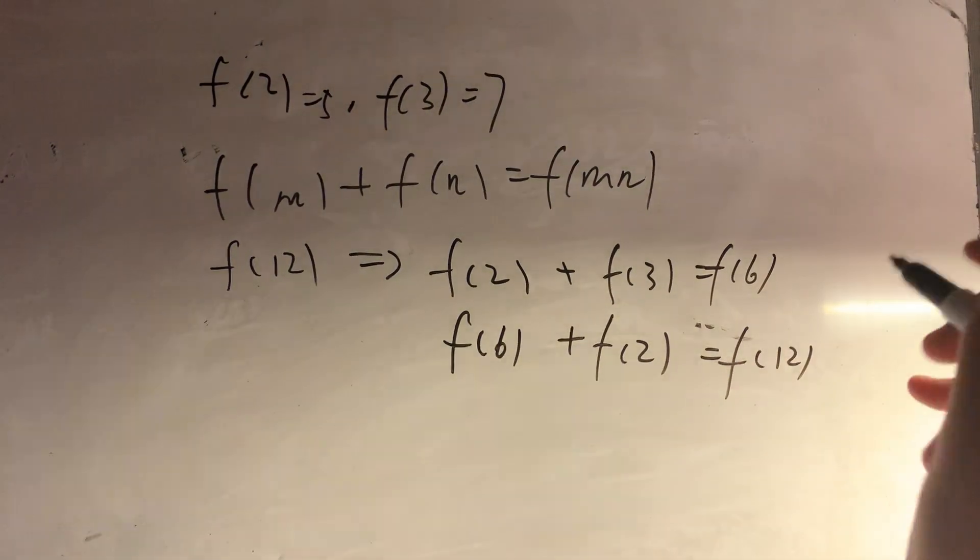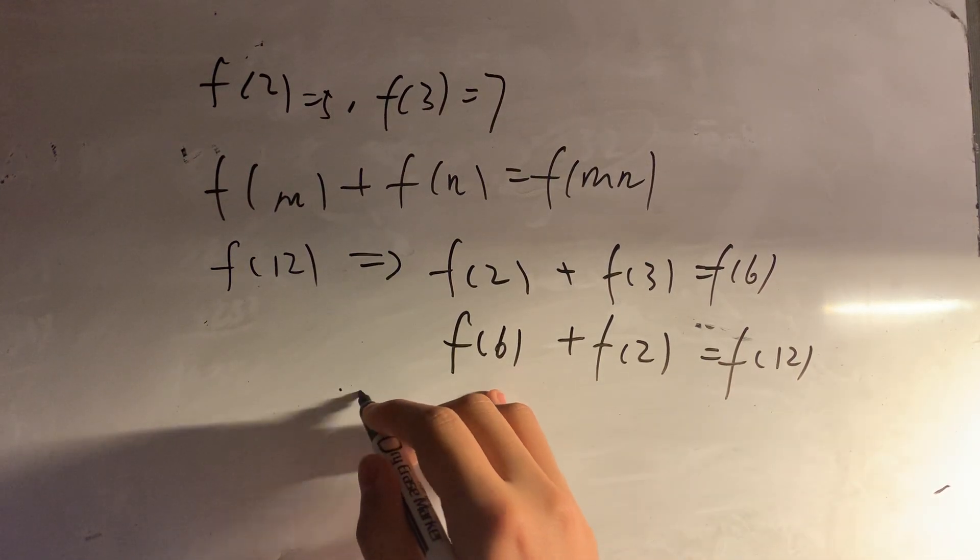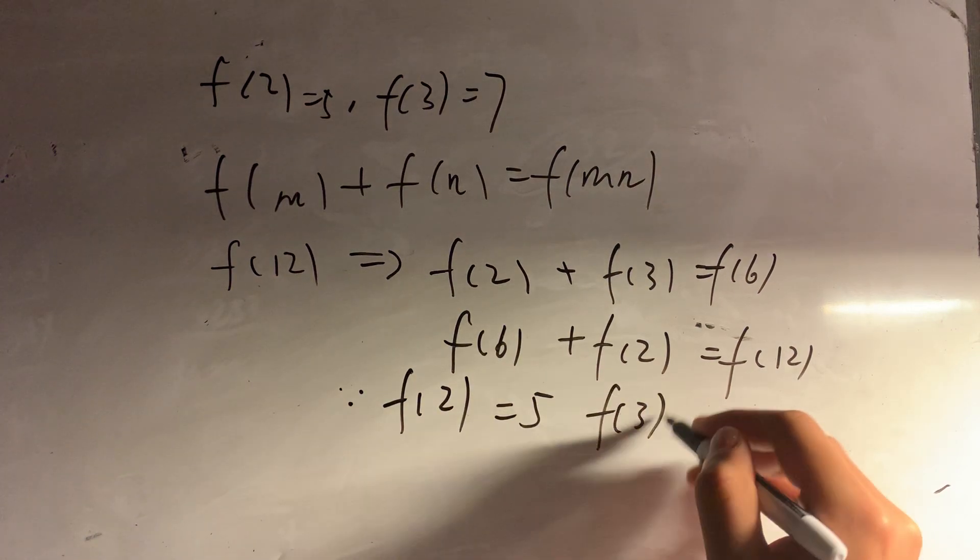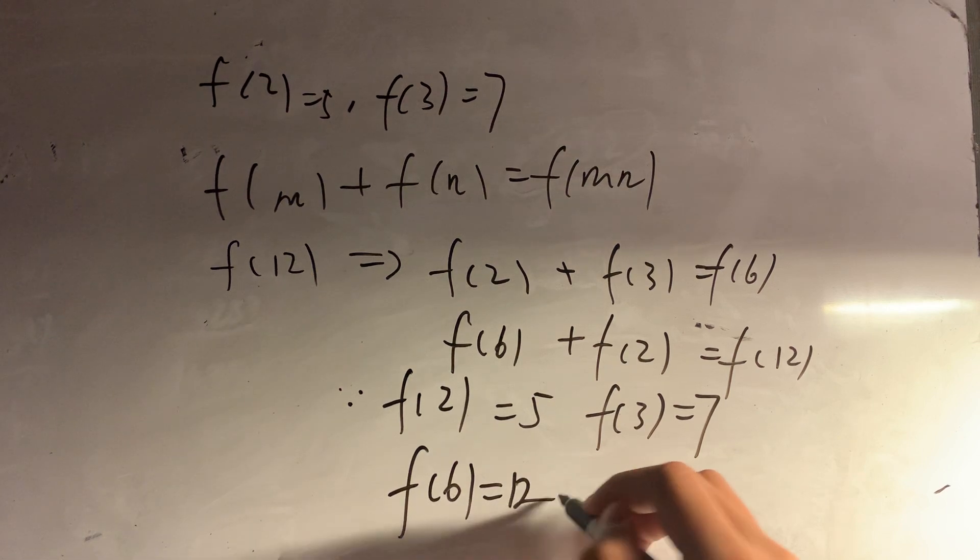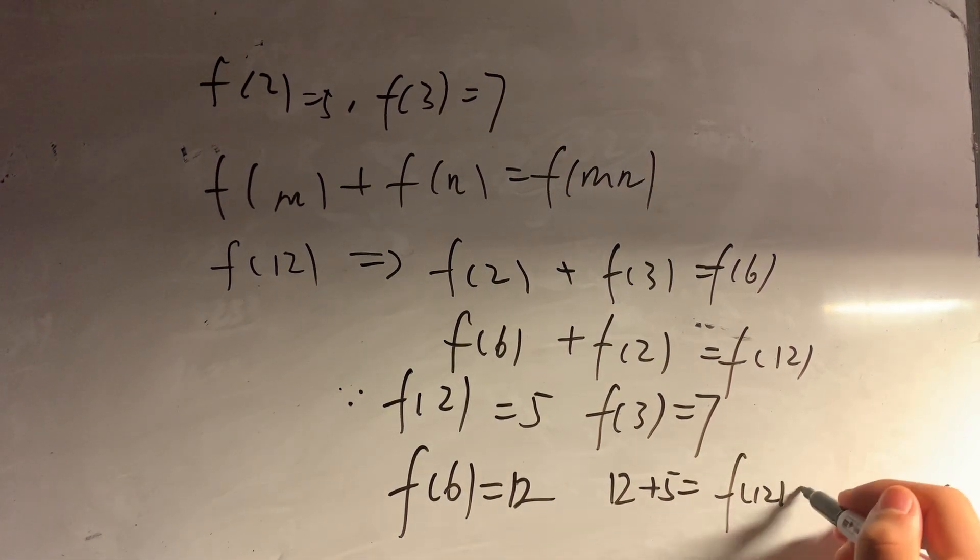We can use this way to help us determine the answer. We know that f(2) is 5 and f(3) is 7. We can then get that f(6) is 12. 12 plus 5, so we get that f(12) is 17.